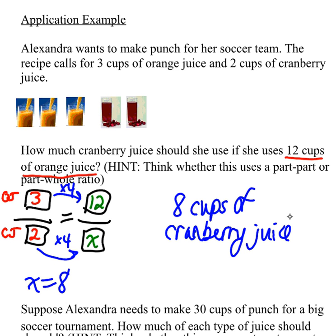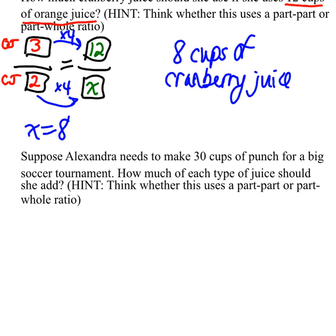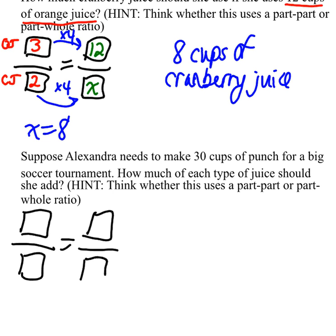Now what if we extended this problem, and now we're making 30 cups of punch? Same idea — we can set up a proportion and we want to fill in the missing boxes. But this time we have to think: part-to-part or part-to-whole? And this time, because it talks about punch, this is going to be a part-to-whole ratio.